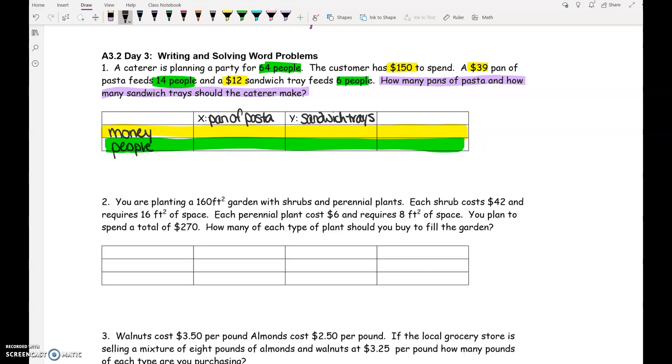Okay. Using this table, let's see if we can put the numbers in the right place. So this area right here is going to be money involving pans of pasta. Which number is money involving pans of pasta? $39 is money for pans of pasta. $12 is sandwich trays money. The other money value I will put over here. That would be the total amount of money.